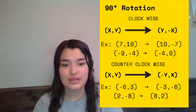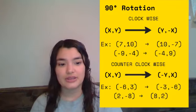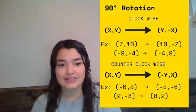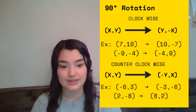In the second example, we have (-9,-4). Again they flip, the y remains the same, and the x turns into its opposite sign. So now instead of being negative, it's going to be positive.